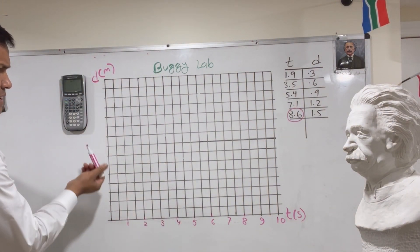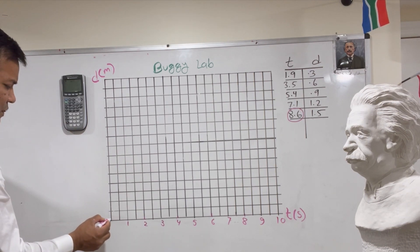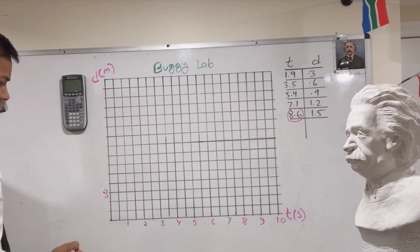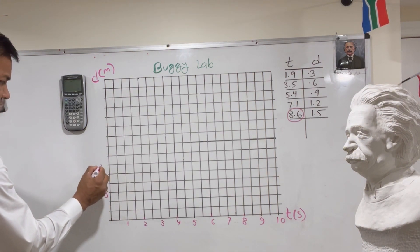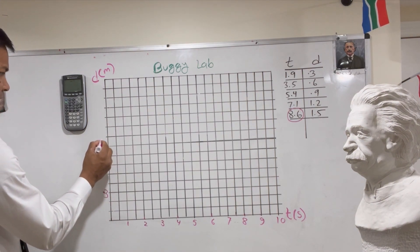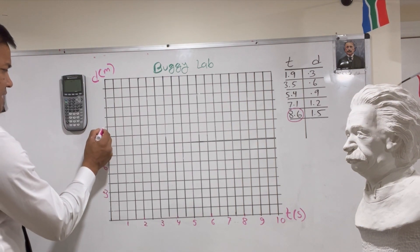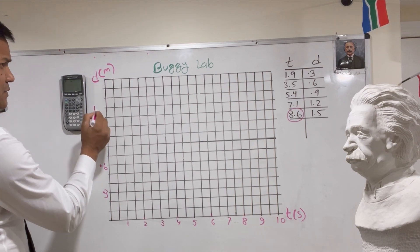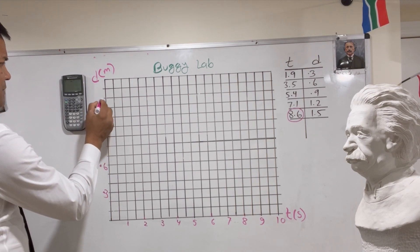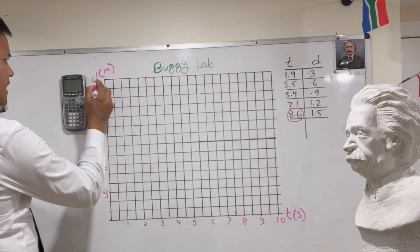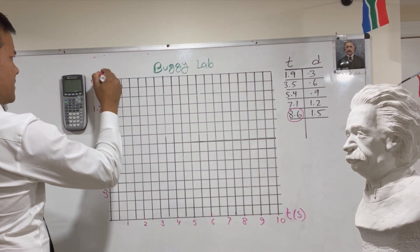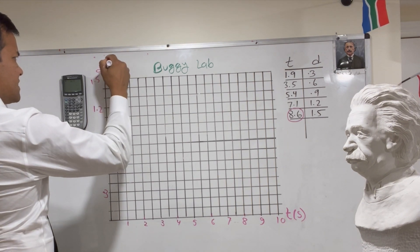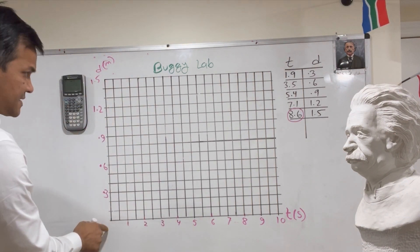For the distance axis, we're going to increment by 0.1 meters: 0.1, 0.2, 0.3, 0.4, 0.5, 0.6, 0.7, 0.8, 0.9, 1.0, 1.1, 1.2, 1.3, 1.4, 1.5. So the last value is 1.5. D is in meters and T is in seconds.